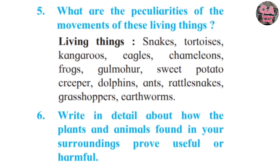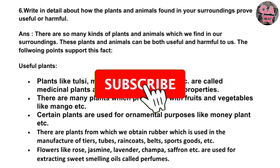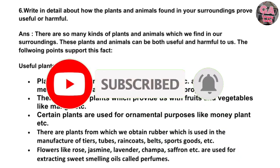Now question six: Write in detail about how plants and animals found in your surroundings prove useful or harmful. There are so many kinds of plants and animals in our surroundings that can be both useful and harmful. Useful plants: Plants like tulsi, mint, ashwagandha, neem, etc. are medicinal plants with various medicinal properties. Many plants provide us with fruits and vegetables like mango. Certain plants are used for ornamental purposes like money plant. There are also plants from which we obtain rubber, used in the manufacture of tires, tubes, raincoats, belts, sports goods, etc.